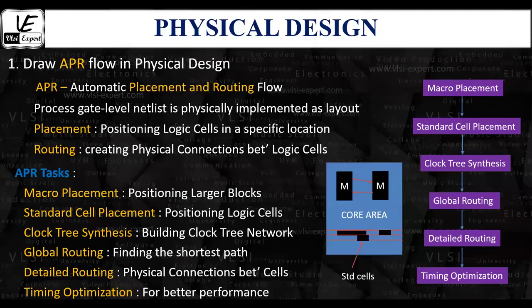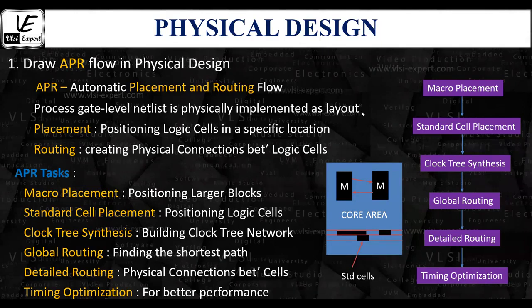The first question is: draw the APR flow in the physical design process. In the context of physical design for integrated circuits, the automatic placement and routing flow — in short, APR — is a crucial process whereby the gate-level netlist, usually obtained from the synthesis tool, is physically implemented as a layout by placing standard cell layouts and auto-routing the cells based on the connections inferred from the netlist.